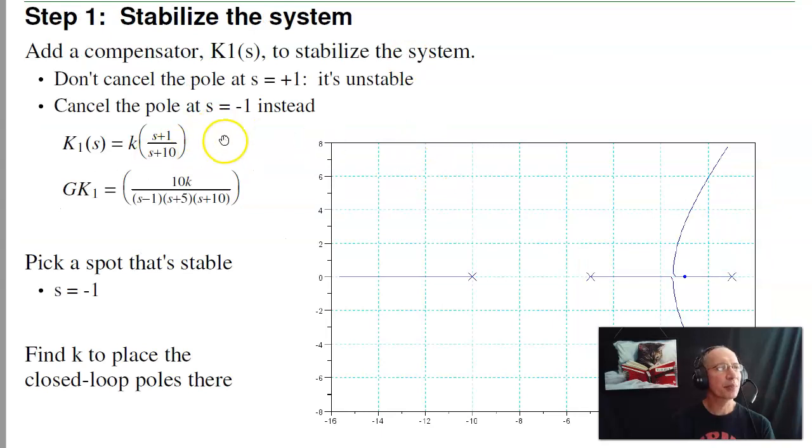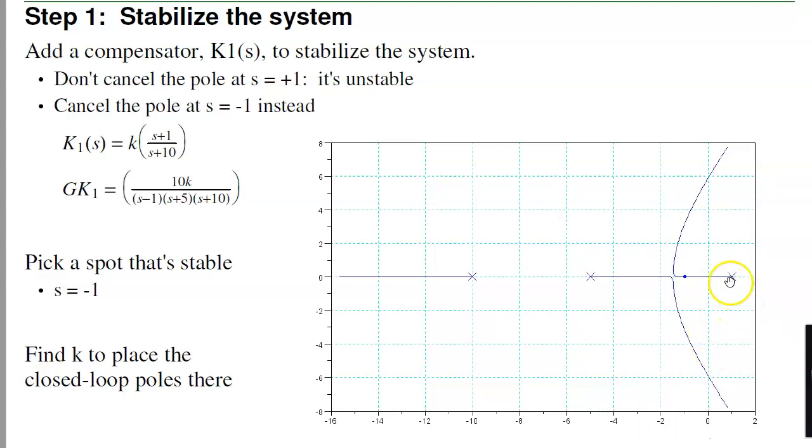The first step is just stabilize it. I've got a pole at plus 1. Let's get this out of the way. Pole at plus 1, and minus 1, and minus 5, minus 10. I can't get rid of the pole at plus 1. That's unstable. But if I get rid of the pole at minus 1, and stick it out at minus 10, now the root locus becomes this. The pole at plus 1 and minus 5 come together, split apart. In this region right here, I've got a stable system. And I don't really care where I pick in this system, in this region. Anything that's stable. Once I stabilize it, I'll then design K2. Design a feedback controller for a stable system.